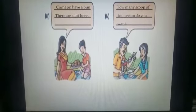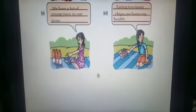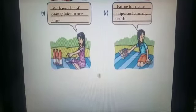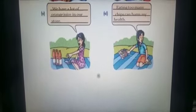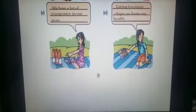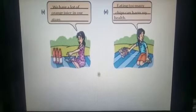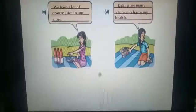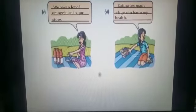In the next slide, this lady is pointing toward the bottle of juice, so you will write the speech bubble which is before the bottle of juice on page number 14: 'We have a lot of orange juice.' In the next picture she is having chips, so you will fill the speech bubble from page number 14 which is after the picture of chips.